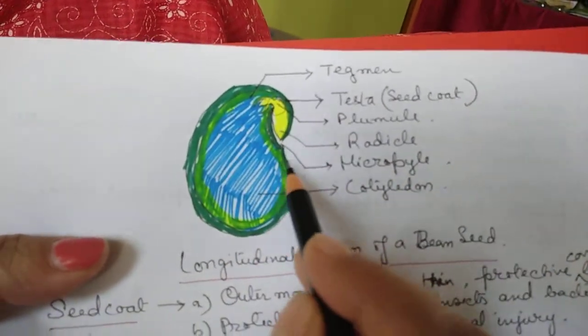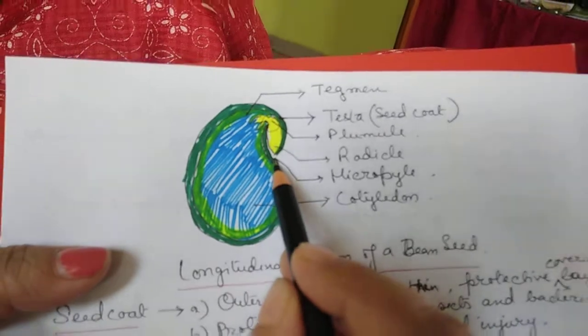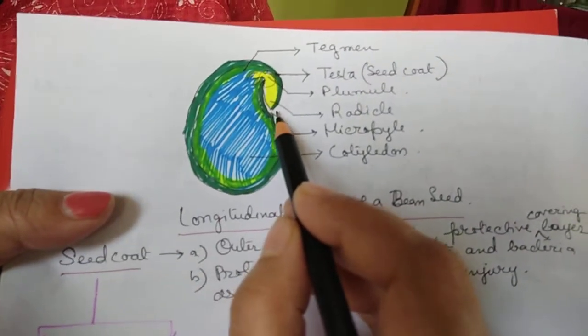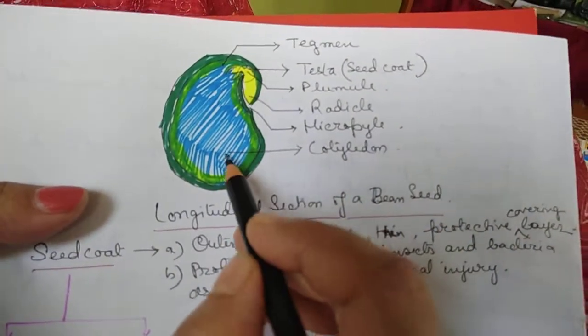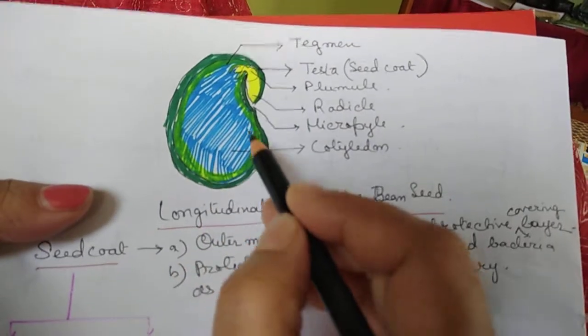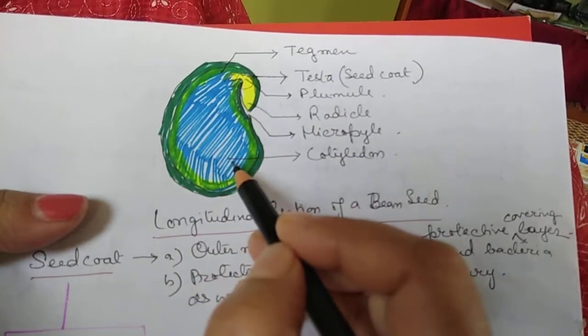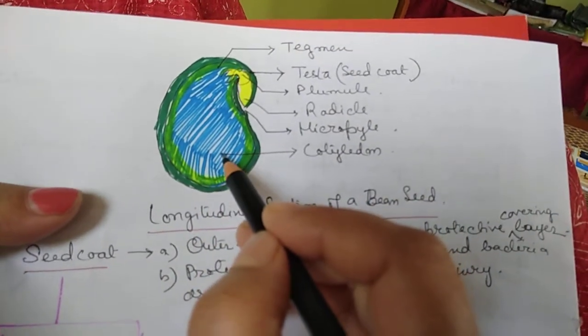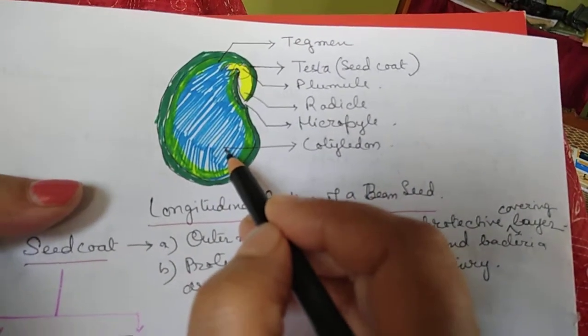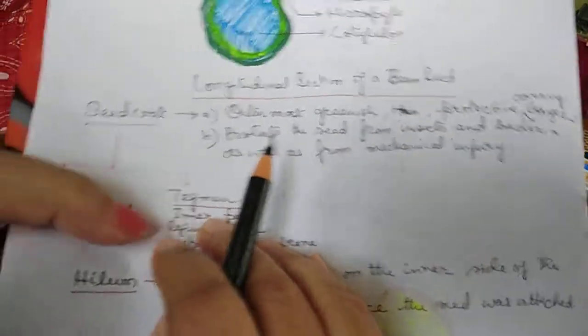There is a micropyle, which is a pore through which water enters the seed. The major portion is the cotyledon, where food is stored for the seed to grow.